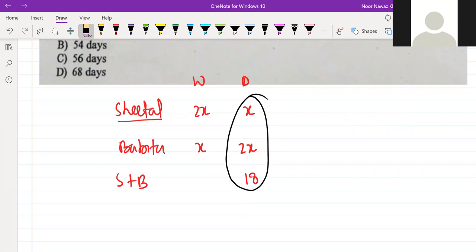These are all days. What will be the relation? X times Y upon X plus Y. If one is doing x days and the other is doing y days, then what is the formula?